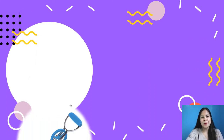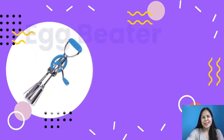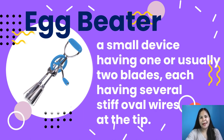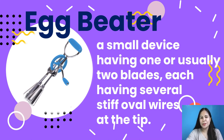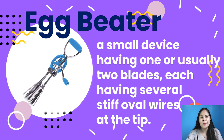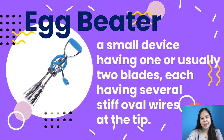For our last tool, we have an egg beater — a small device having one or usually two blades, each having several stiff oval wires at the tip. It is a handheld kitchen utensil with rotating blades used for beating, whipping, or mixing. An example of an egg beater is what someone would use to whip heavy cream into whipped cream.